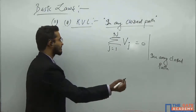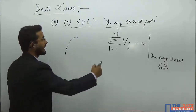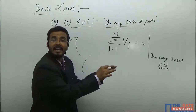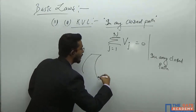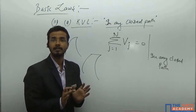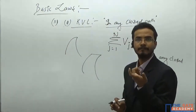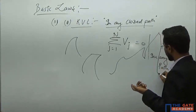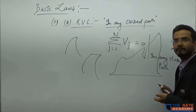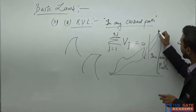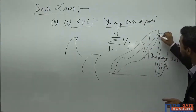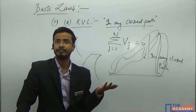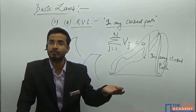Somewhere you will get the rise of voltage, and to maintain the sum at zero, some drop will also be there. If any component is providing the rise of voltage, it is providing energy to the system. If there is a fall in voltage anywhere, that component is consuming the voltage. Voltage is a measure of energy. So if you are starting from zero, whatever height you achieve, at the last you have to come back to the same position from where you started.